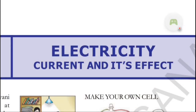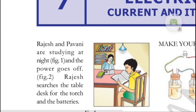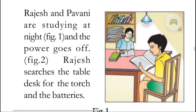The name of the chapter is electricity current and its effect. Let me read some text and explain. Rajesh and Pavani are studying at night and the power goes off. Rajesh searches the table desk for the torch and batteries. They were studying at night in their study room but suddenly the power went off, and Rajesh searches for the torch and batteries.